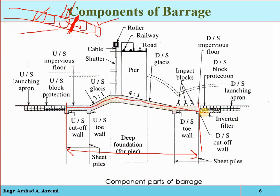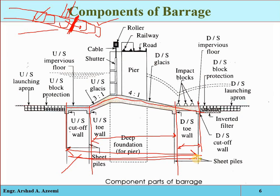The main portion from the upstream cutoff wall to the downstream cutoff wall is constructed from reinforced concrete so that the structure is more stable and compacted. This main portion is further divided into three parts: the upstream portion — from the upstream cutoff wall to the upstream toe wall; the downstream portion — from the downstream toe wall to the downstream cutoff wall; and the intermediate portion — from the upstream toe wall to the downstream toe wall.